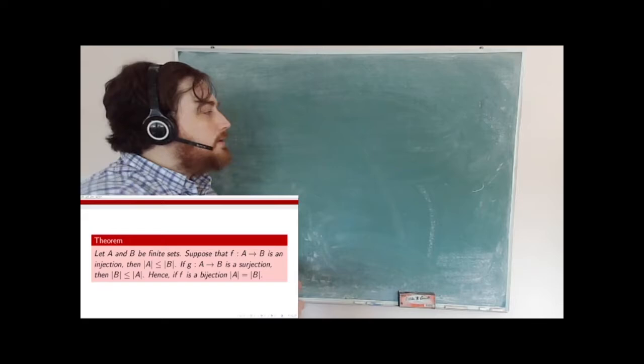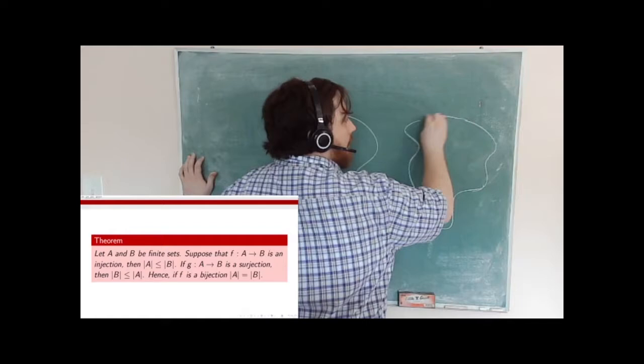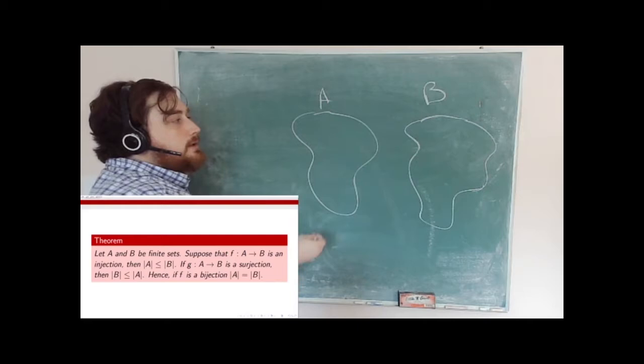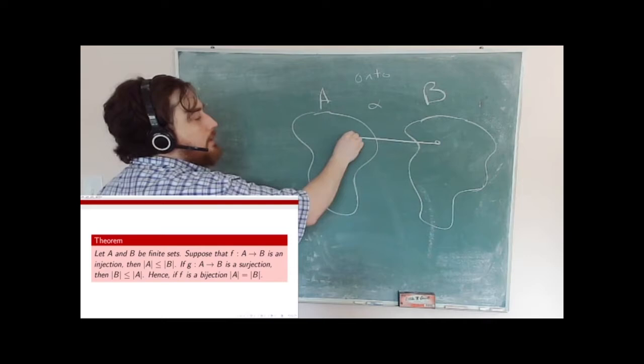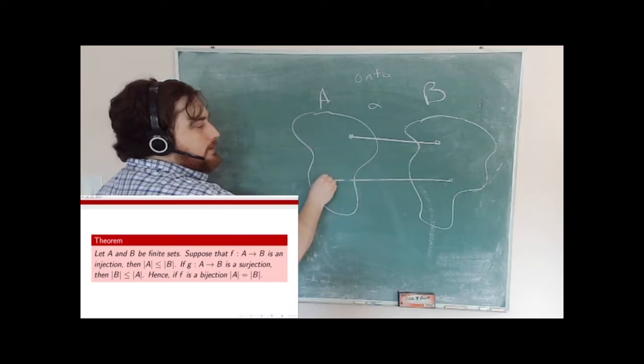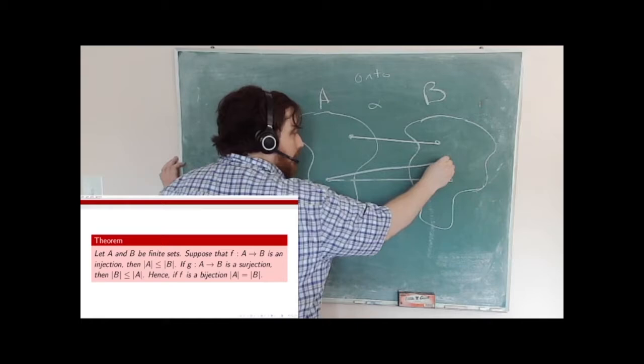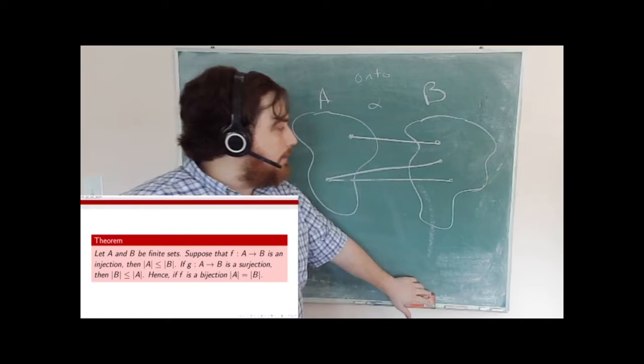The idea here is that we're going to have mappings from a set A to a set B, and I just want to show at least a proof by picture of what's going on here. If I can find some mapping alpha from A to B where this is onto, what does that mean? Well, for every element in B I can find some element in A. Now I can't have this picture where one element covers two things, because that's not a mapping or a function.